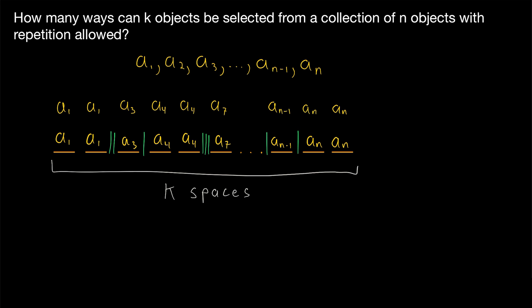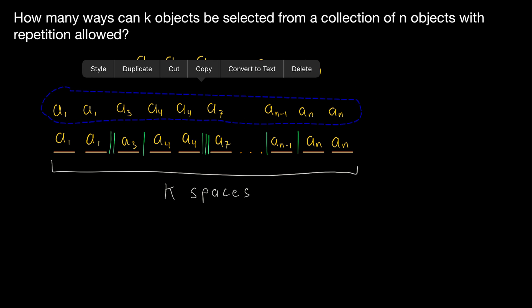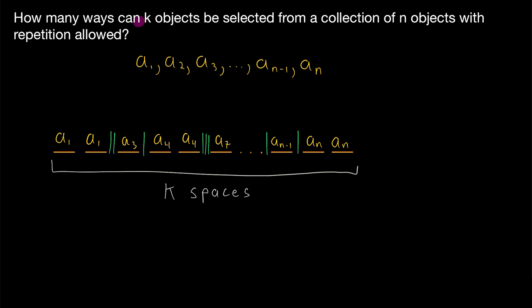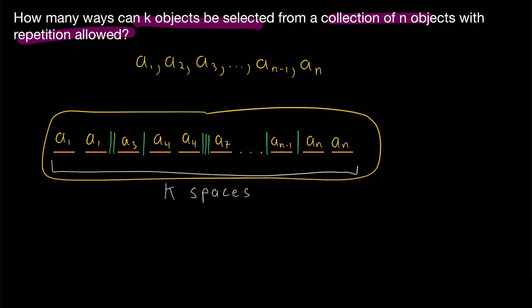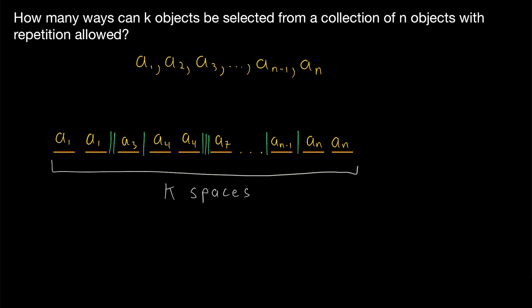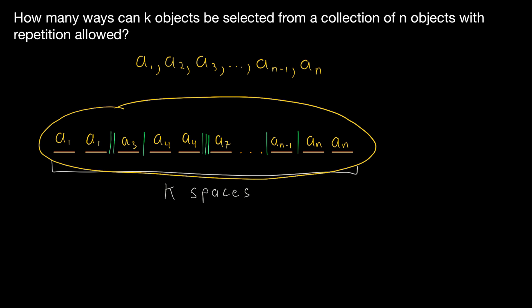Pasting the original listing next to the bar representation, we can see it's the same thing. My point is that to count the number of ways we can select k objects from a collection of n objects with repetition allowed, we can just count the number of ways that we can place bars in spaces. Each combination of k objects corresponds to exactly one arrangement of these bars, and each arrangement of bars describes exactly one combination of k objects.